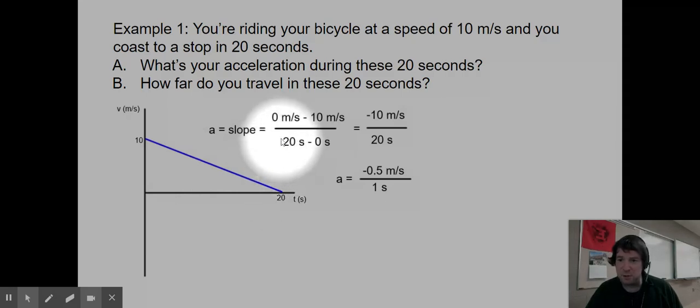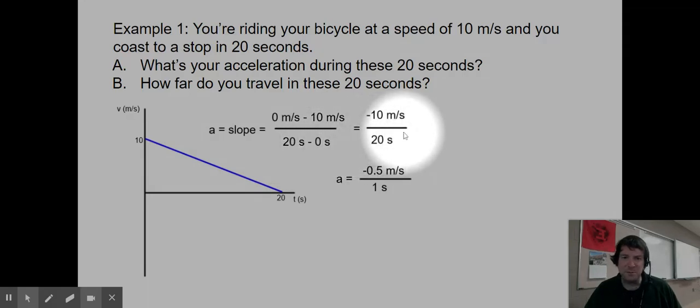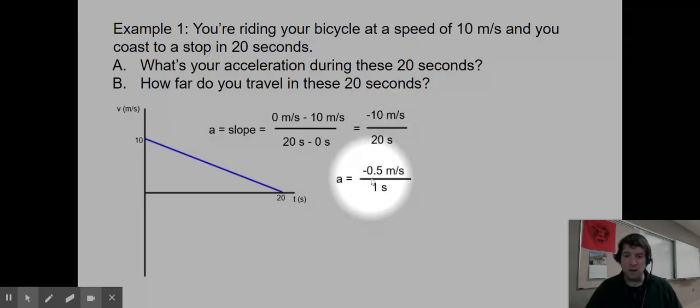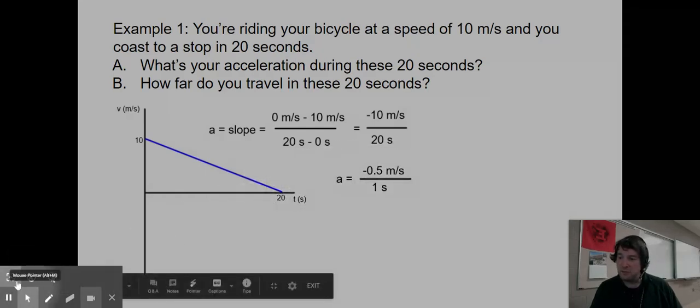So to calculate my slope, my ending velocity was zero. My starting was positive 10 meters per second. So I subtract my ending minus my initial. I subtract my ending minus initial time. So my slope then is negative 10 meters per second divided by 20 seconds. That divides down to get one in my denominator. Then I have a negative 0.5 meters per second for every one second or negative one half of meter per second every second.